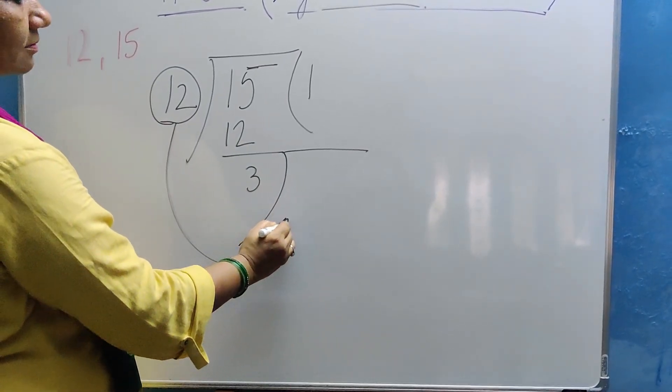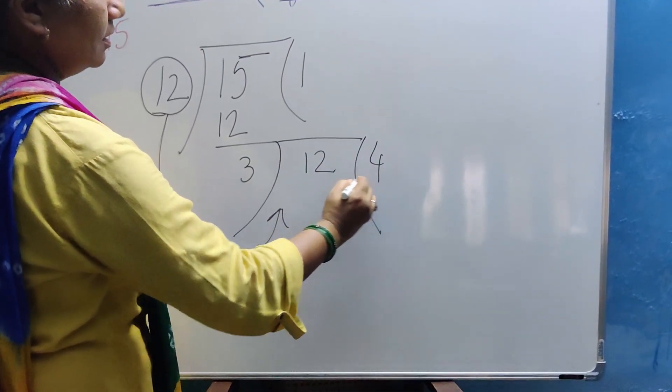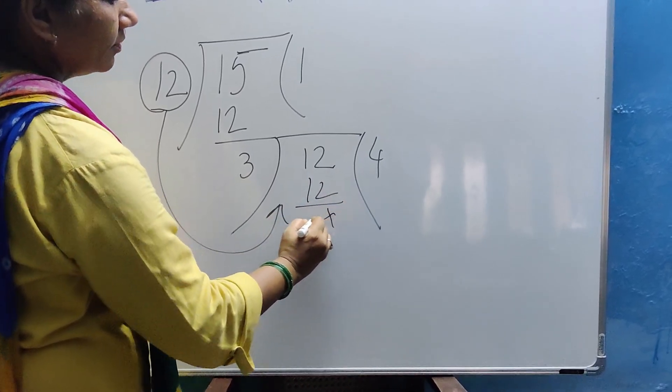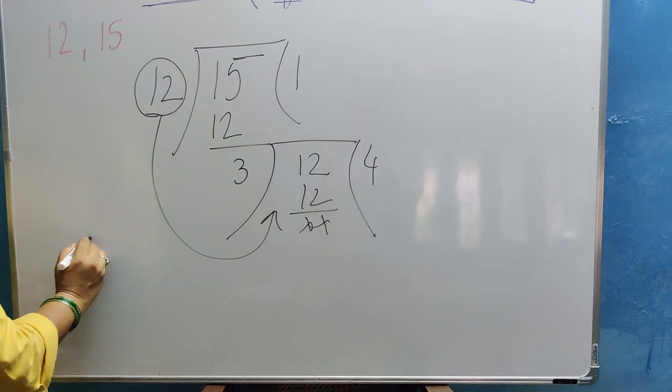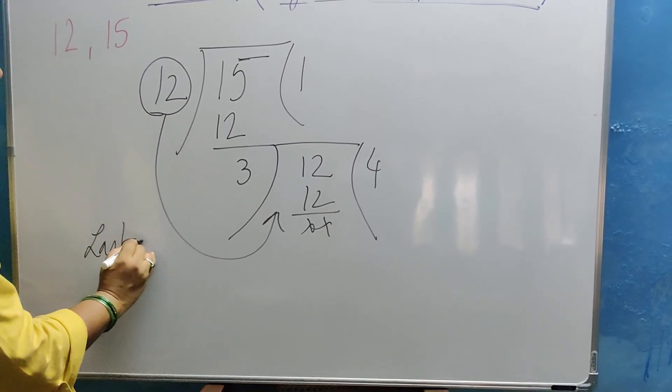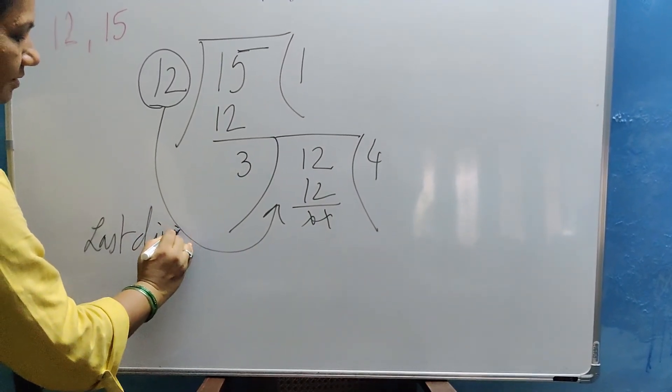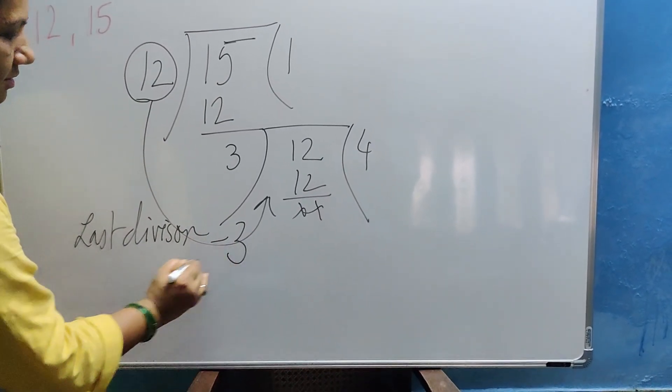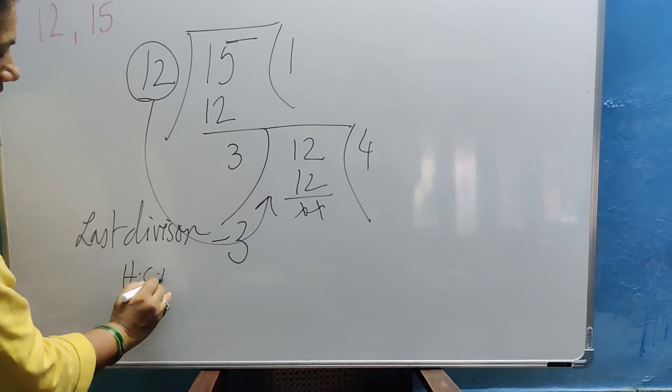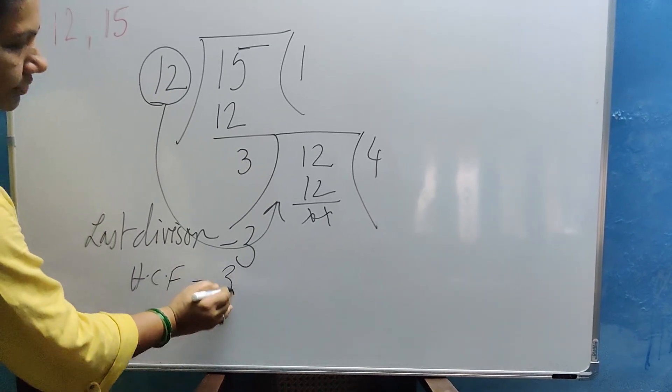Now 3 fours are 12. We get a 0 here. Now what is the HCF? The HCF is the last divisor. We see the last divisor. Which is the last divisor here? First is 12, this is 3. So 3 is the last divisor. So what is the HCF? HCF is equal to 3 in this case.